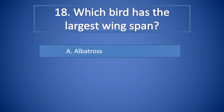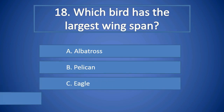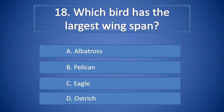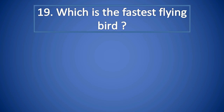Question Number 18: Which bird has the largest wingspan? A. Albatross, B. Pelican, C. Eagle, D. Ostrich. Right answer is A. Albatross.